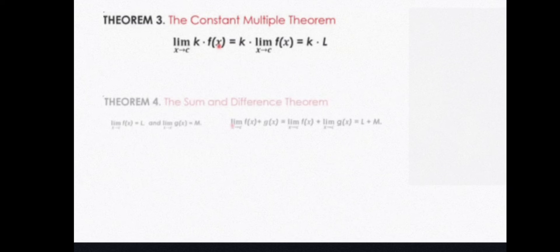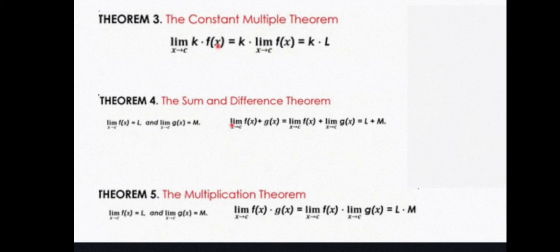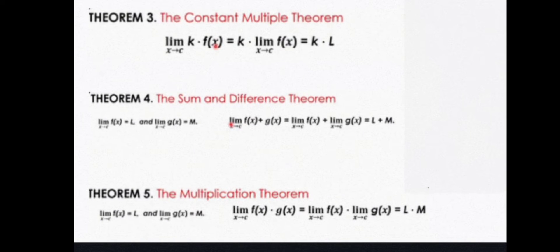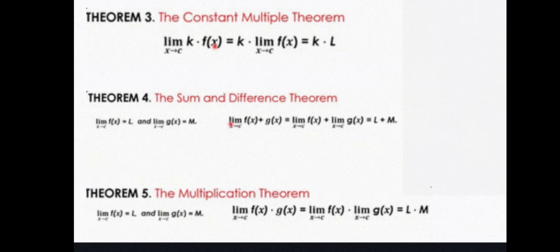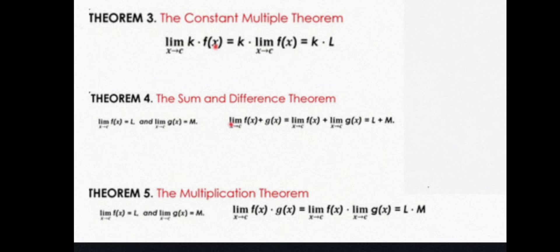We have Theorem 3, the constant multiple theorem. The limit of k times f(x) as x approaches c is equal to k times L.